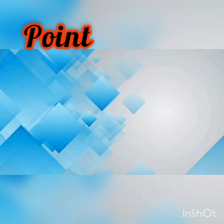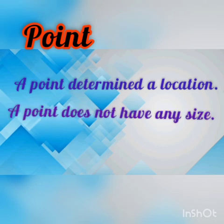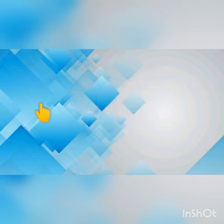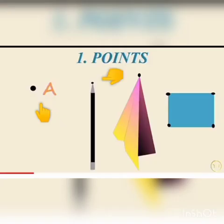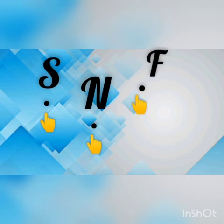First, let us see what a point is. A point determines a location. A point does not have any size — it has no length, breadth, or height. Examples of a point include the tip of a pencil, the corner of a rectangle. Points are denoted by alphabet letters; for example, point E, point F, as shown in the figure.